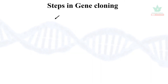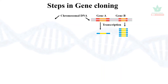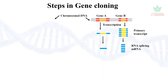Let's look at an example of the steps in gene cloning. Gene A and Gene B from chromosomal DNA. Transcription produces a primary transcript, then splicing gives mRNA. Complementary sequences are added to produce cDNA.